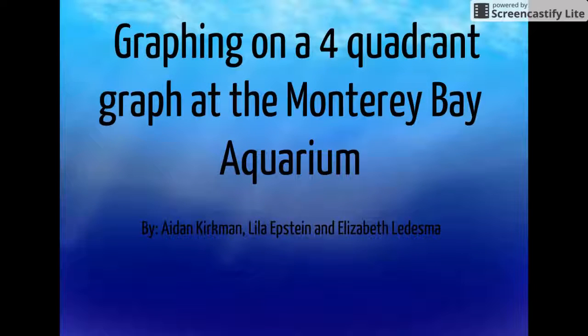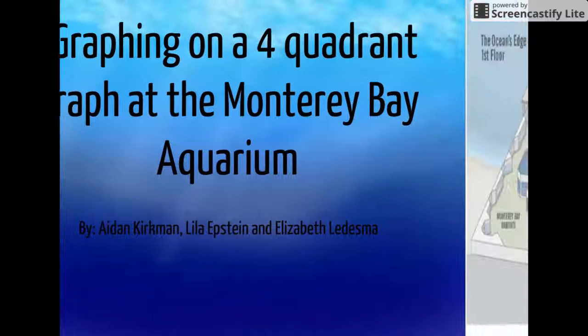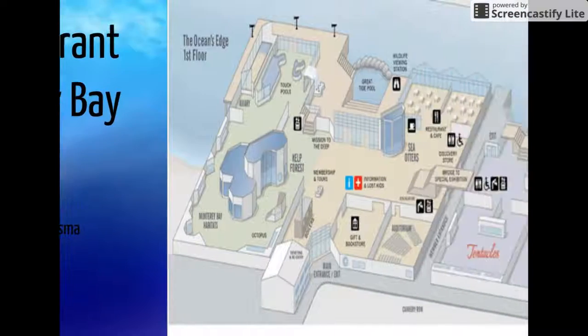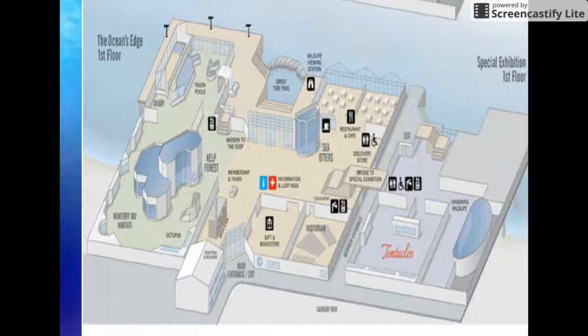Hi, our names are Aiden, Lila, and Elizabeth. We'll be showing you how to plot a point on a four-quadrant graph. You can use a four-quadrant graph for many things, such as finding a specific location on a map.